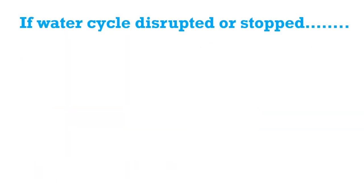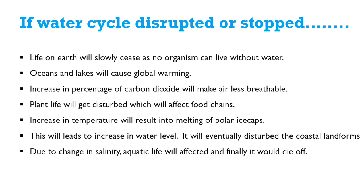The water cycle is very important in our life. If the water cycle were disrupted or stopped, life on Earth would slowly cease, as no organism can live without water. Oceans and lakes drying up would cause global warming. An increase in carbon dioxide would make air less breathable. Plant life would be disturbed, affecting food chains. Rising temperatures would melt polar ice caps, increasing sea levels, disturbing coastal landforms, and altering salinity — which would devastate aquatic life.